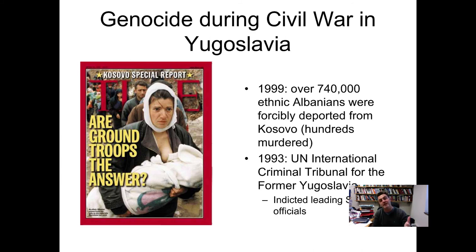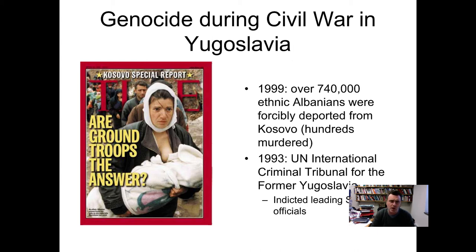In Kosovo, ethnic Albanians were about to be exterminated by Serbian forces and were in the process of being forcibly deported. Kosovo was at that point a part of Serbia. NATO intervened in 1999 — NATO is a military alliance — but there was no legitimacy from the UN Security Council because Russia, the traditional ally of Serbia, had vetoed it.